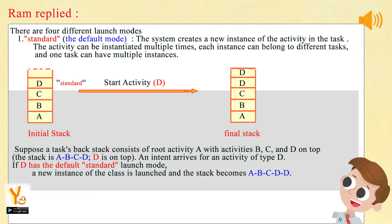Suppose a task's backstack consists of root Activity A with activities B, C, and D on top. The stack is A, B, C, D — D is on top. An intent arrives for an activity of type D. If D has the default standard launch mode, a new instance of the class is launched and the stack becomes A, B, C, D, D, as shown in the figure.